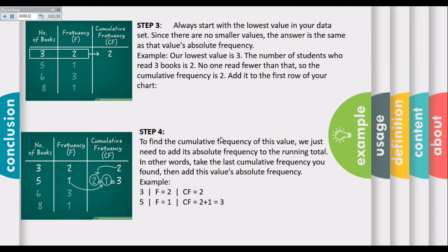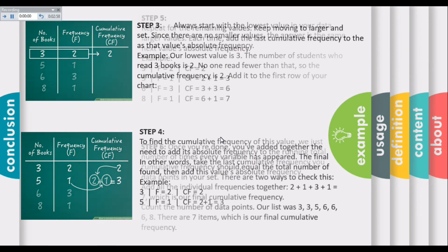Step 4: To find the cumulative frequency for the next value, take the last cumulative frequency you found, then add this value's absolute frequency. Step 5: Repeat for the remaining values.